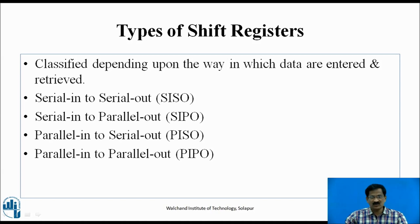Types of Shift Registers are classified based on the way data is entered and retrieved. They are: Serial-In Serial-Out (SISO), Serial-In Parallel-Out (SIPO), Parallel-In Serial-Out (PISO), and Parallel-In Parallel-Out (PIPO).